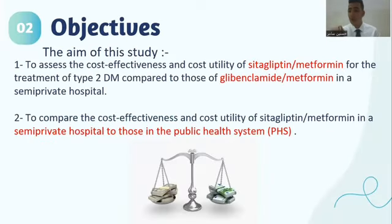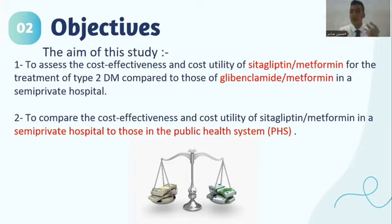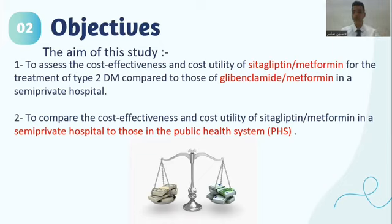The objective — the aim of this study — was to assess the cost-effectiveness and cost-utility of Sitagliptin-Metformin for the treatment of type 2 diabetes mellitus compared to Glibenclamide-Metformin in semi-private hospitals. The second goal was to compare the cost-effectiveness and cost-utility of Sitagliptin-Metformin in semi-private hospitals versus the public health system.